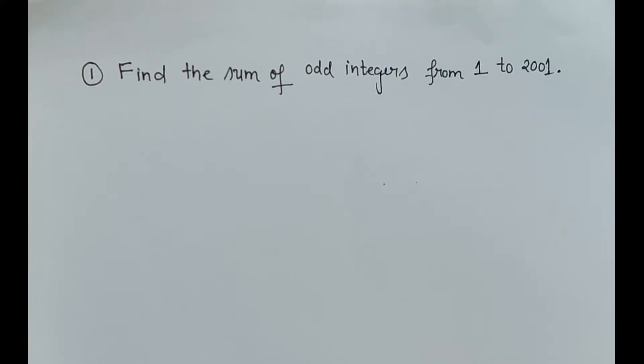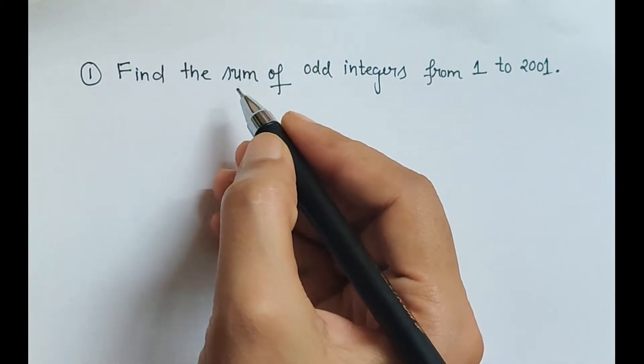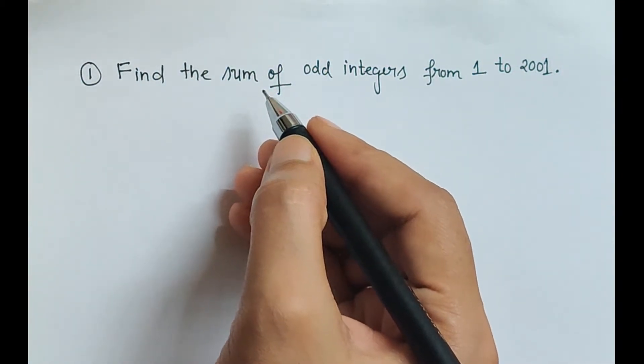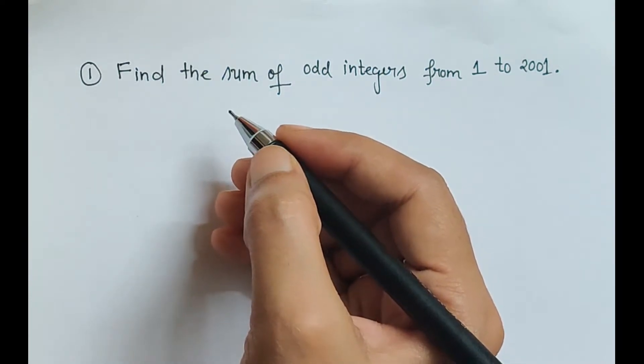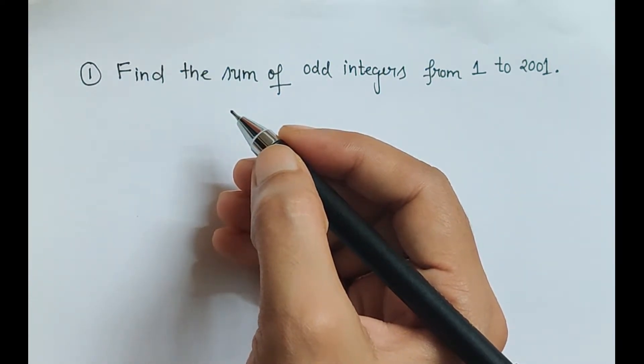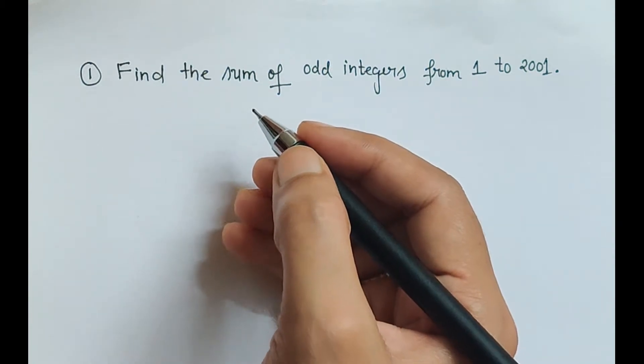The other is for finding the sum up to n terms. So here the question is based on sum of odd integers, so here basically we have to write the formula of sum of n terms.